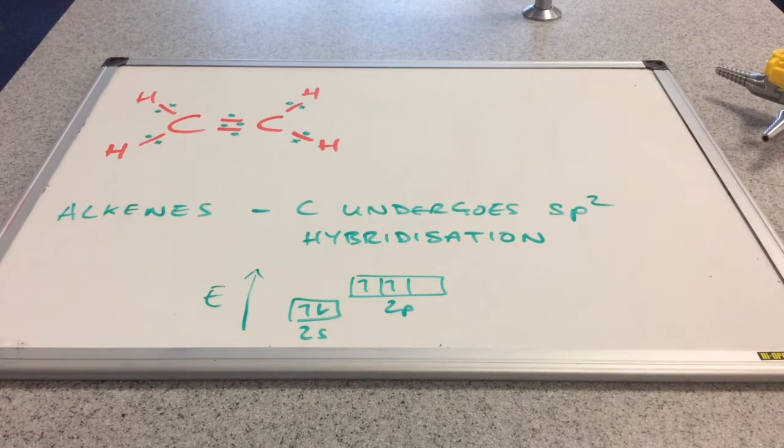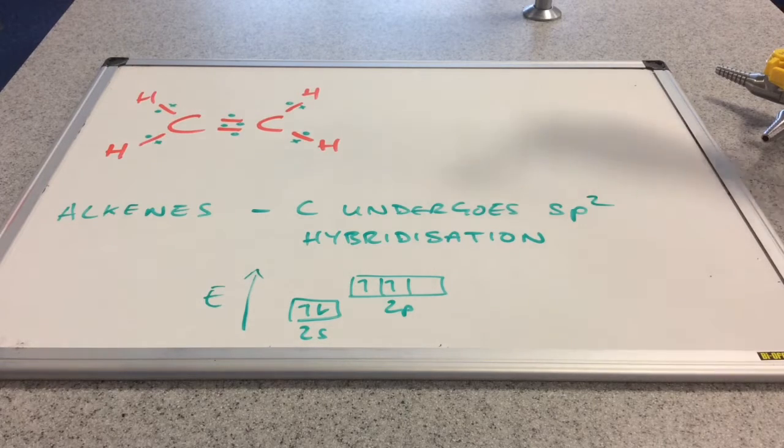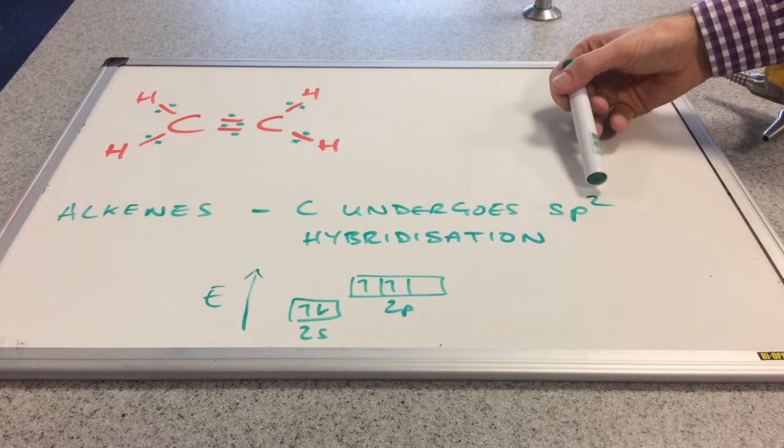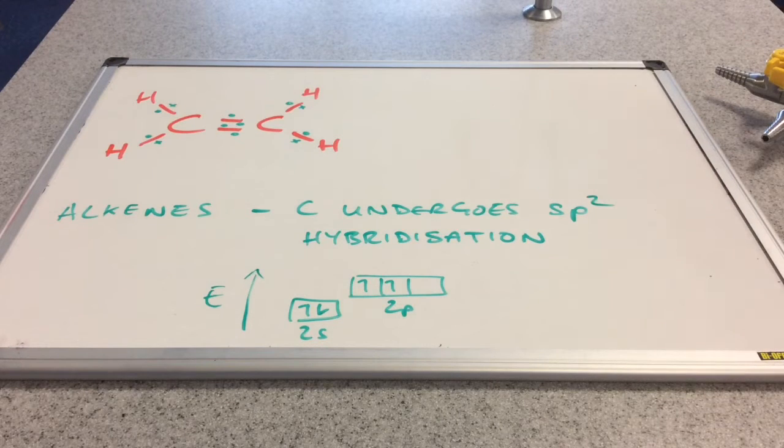Now in the alkenes it's a little bit different. The carbon atoms involved in the carbon-carbon double bond undergo what's called sp² hybridisation. So hopefully your understanding of sp³ hybridisation will help you with this.